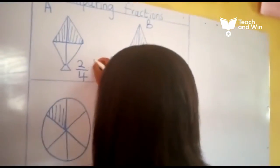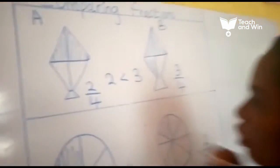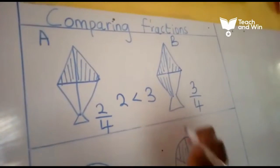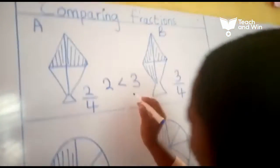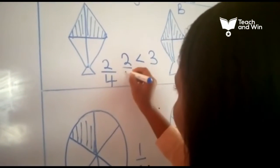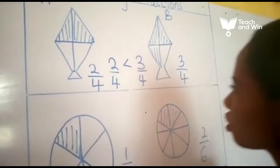So now, since 2 is less than 3, you can say that this fraction is less than this fraction. So you can say that 2 over 4 fraction is less than 3 over 4 fraction.